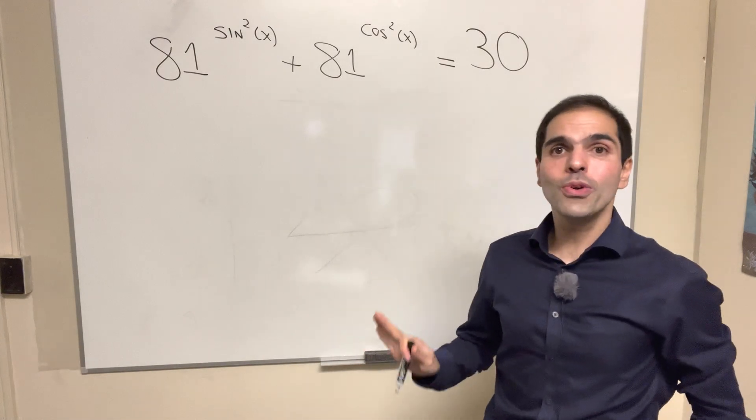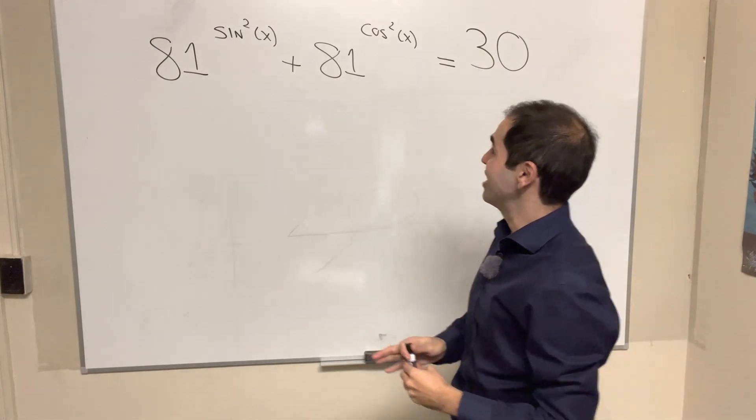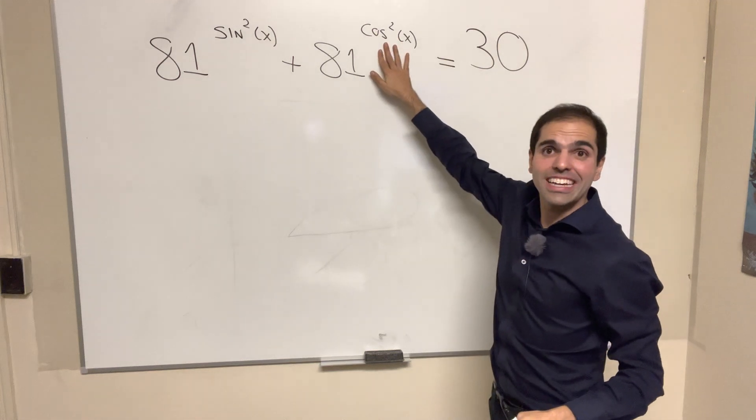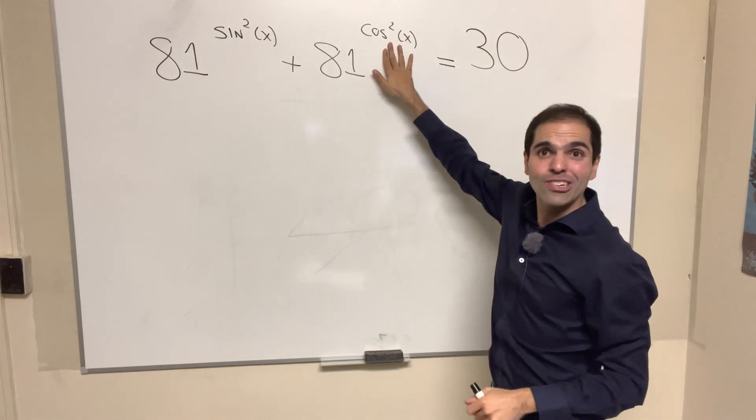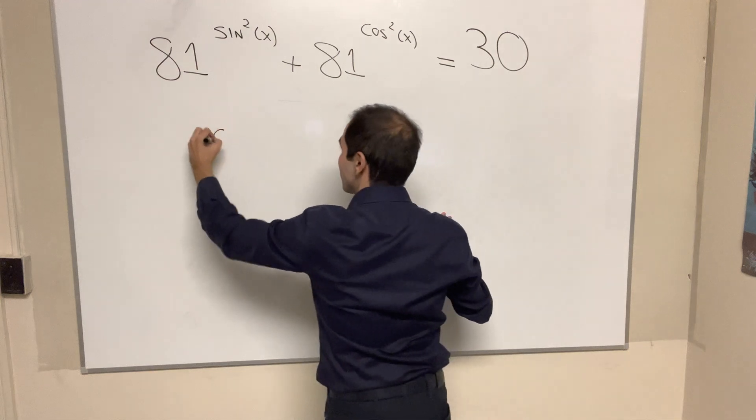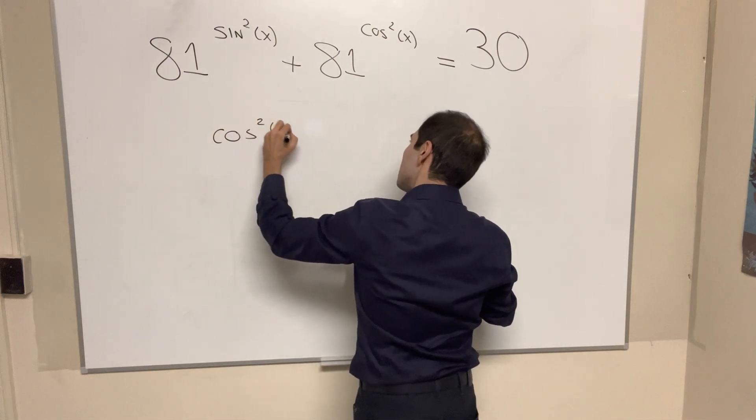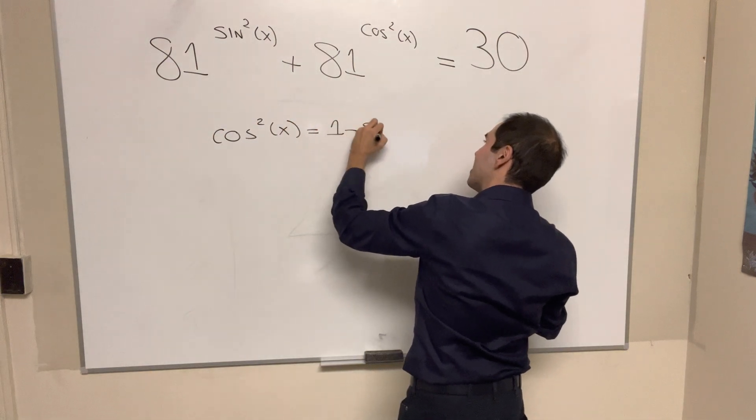Thanks for watching, and here's a super neat trick problem I found on Twitter. And here the trick, or trig, is simply to recognize that cosine squared is 1 minus sine squared x.